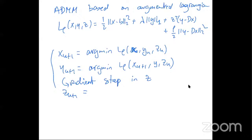Regarding the difference between the ordinary Lagrangian and augmented Lagrangian: the augmented Lagrangian has this additional quadratic term rho/2 * ||y - Dx||^2. The ordinary Lagrangian just adds the constraint to the objective in a linear way; the augmented Lagrangian adds a quadratic term as another way of enforcing the constraint.